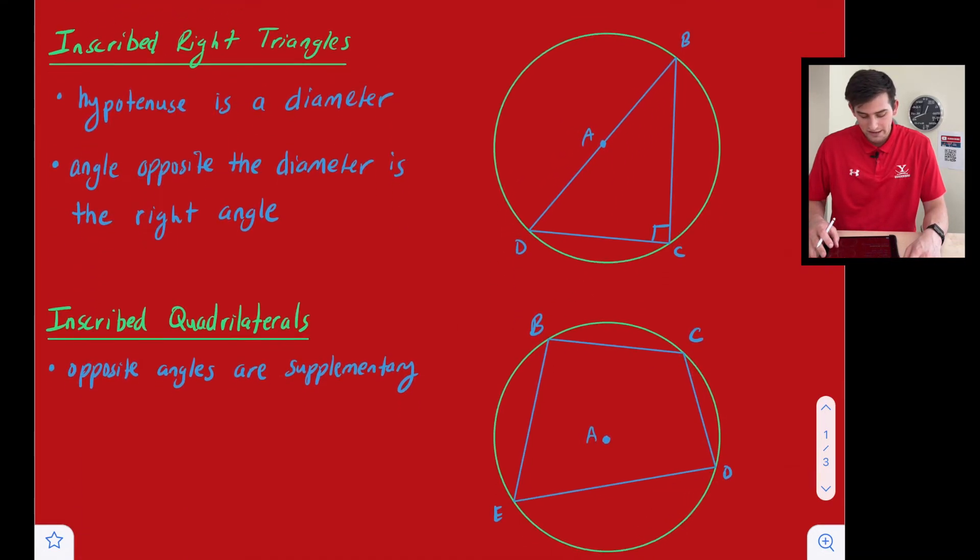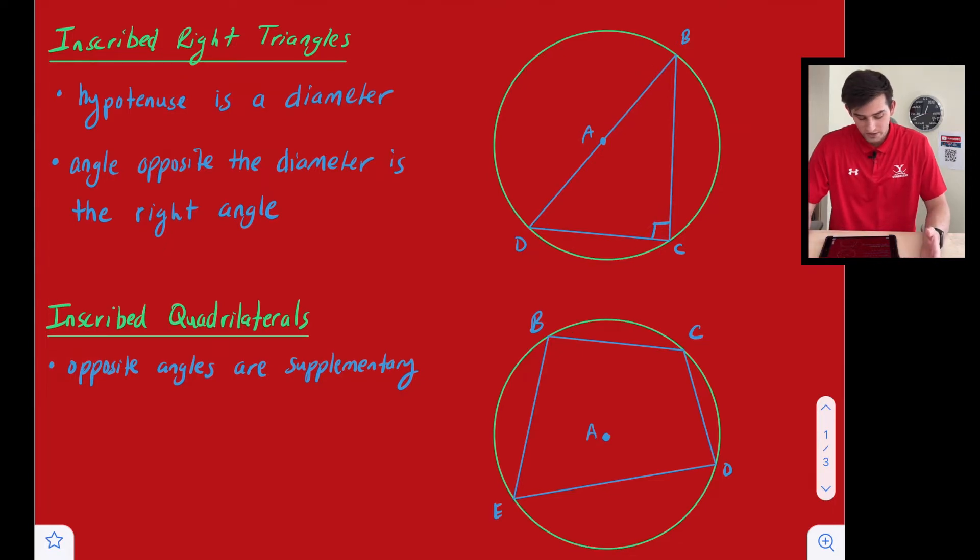All right, so the two specific polygons that we're going to look at being inscribed are a right triangle and a quadrilateral.